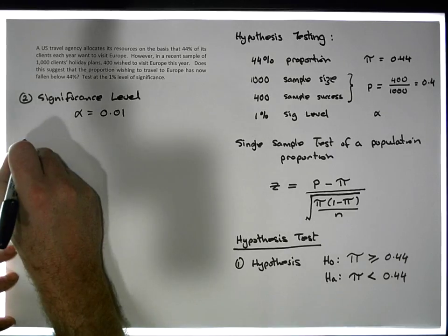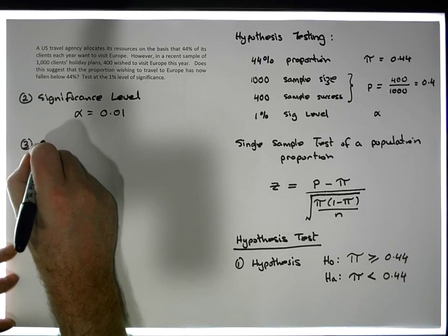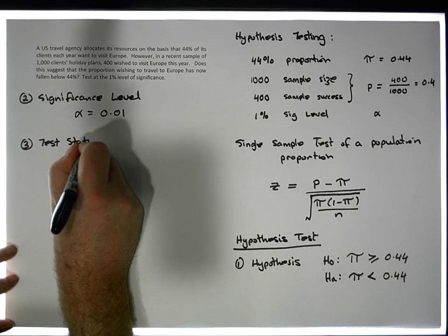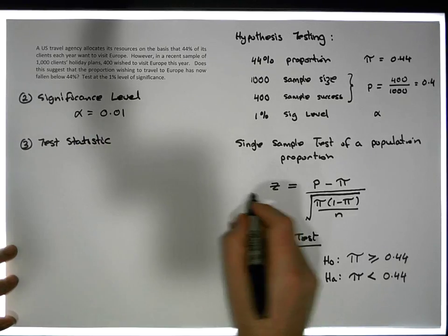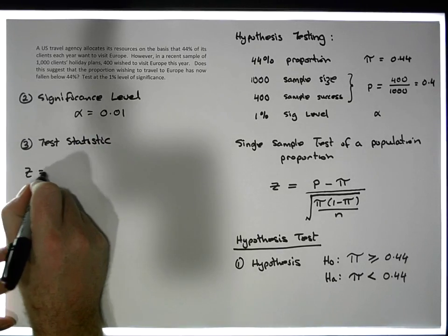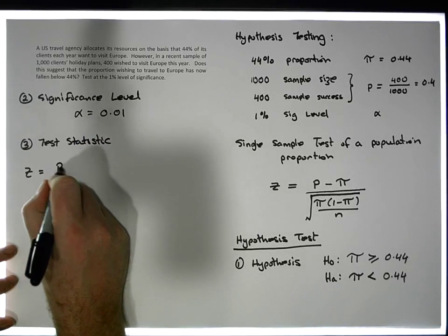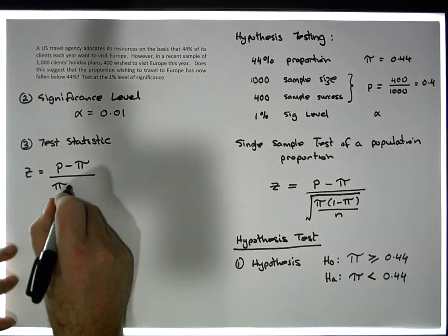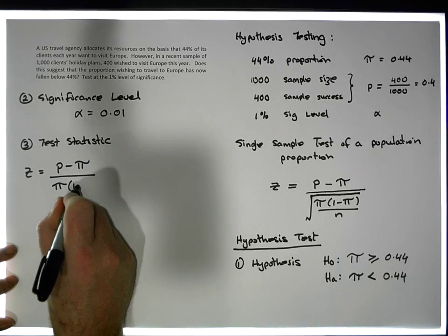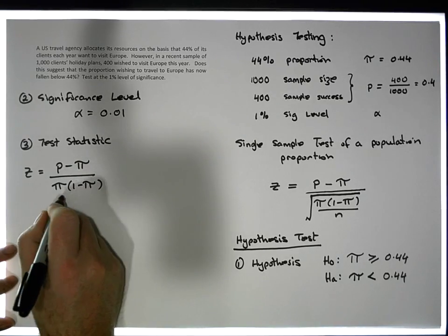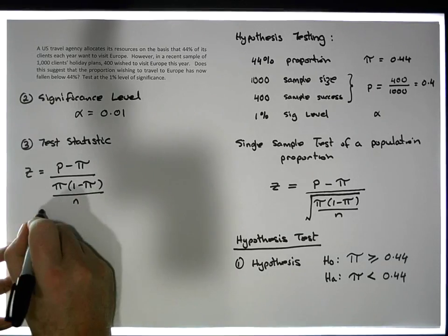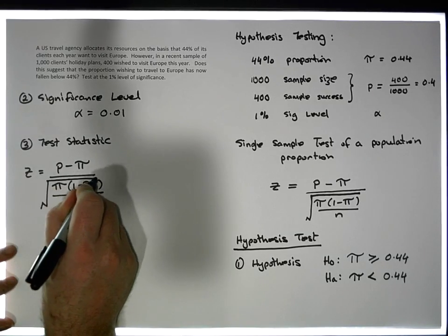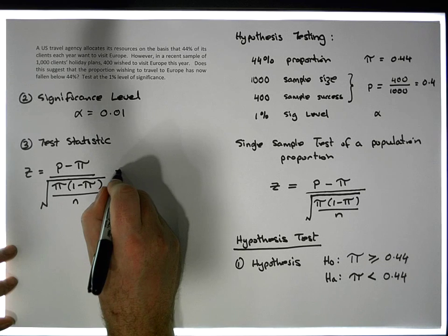Step three is our test statistic. It's a z-score: z equals the evidence minus the null position, divided by the square root of the null position times one minus the null position, all divided by the sample size.